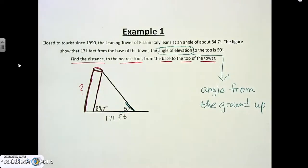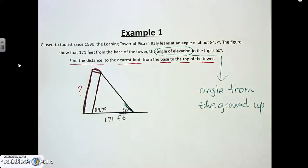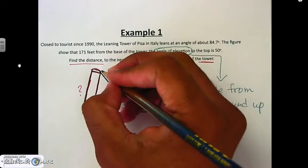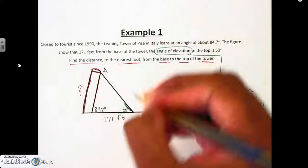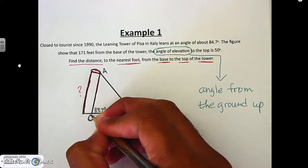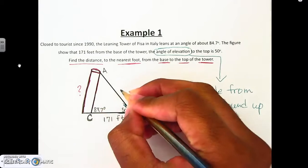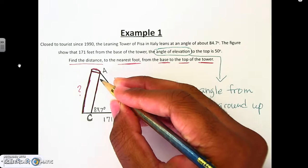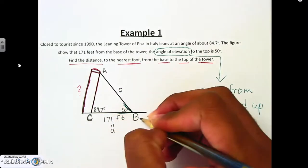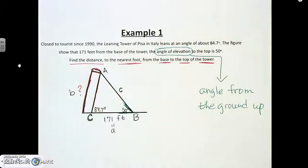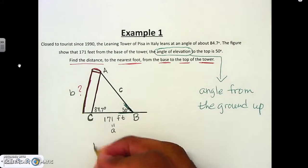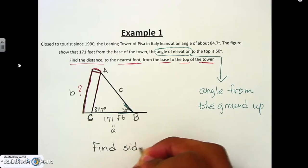The only thing we need to find is this side over here. Go ahead and label your angles so you can figure out which side is which. I'm going to call the top angle A, this one B, and this one C. That means this is side c, this is side a, and this is side b. We're trying to find the distance from the base to the top of the tower, so we're trying to find side B.